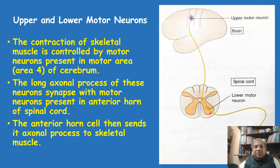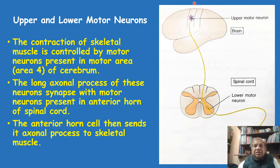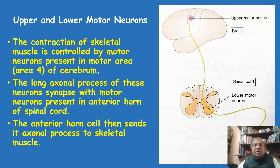This long axonal process which synapses with the motor neuron in the spinal cord is actually the lower motor neuron. The upper motor neuron is in the brain, and the lower motor neuron is present in the anterior horn of the spinal cord. Through its axon, the impulse reaches up to the muscle, leading to contraction of the skeletal muscle. So for the contraction of any skeletal muscle, we need two neurons: an upper motor neuron and a lower motor neuron.